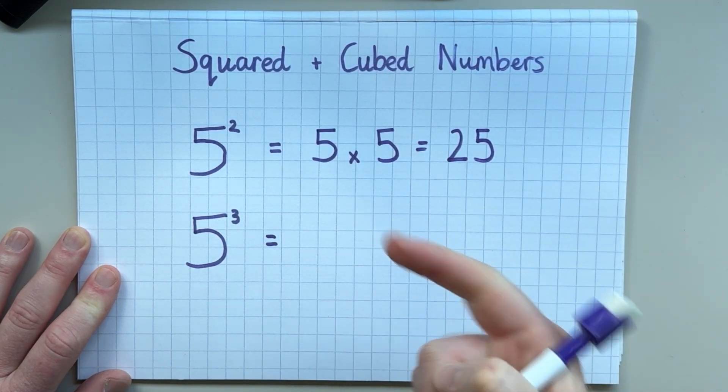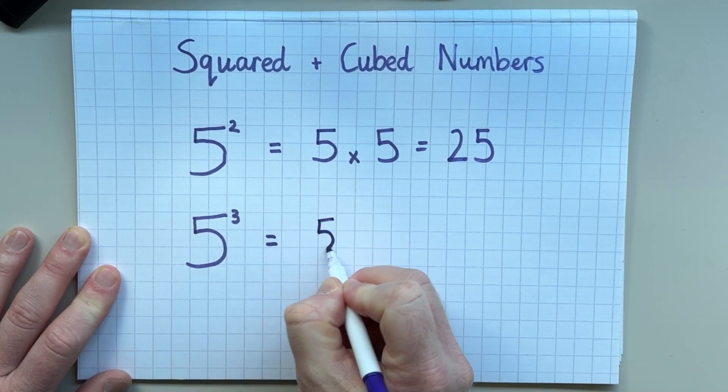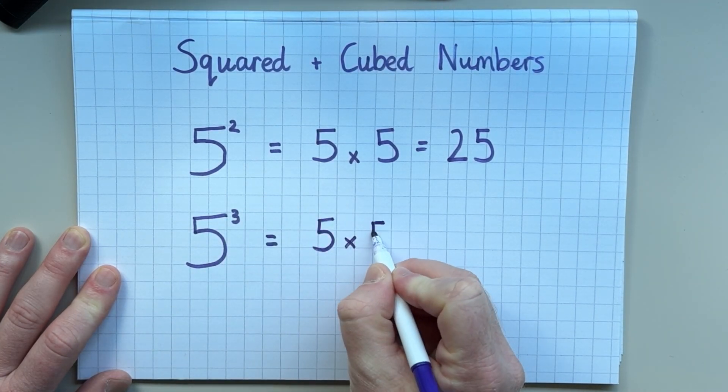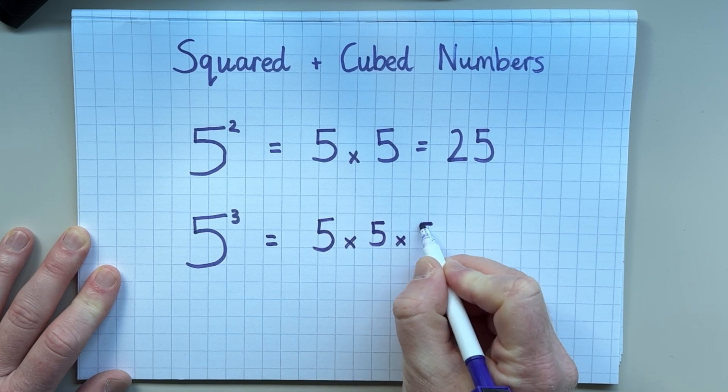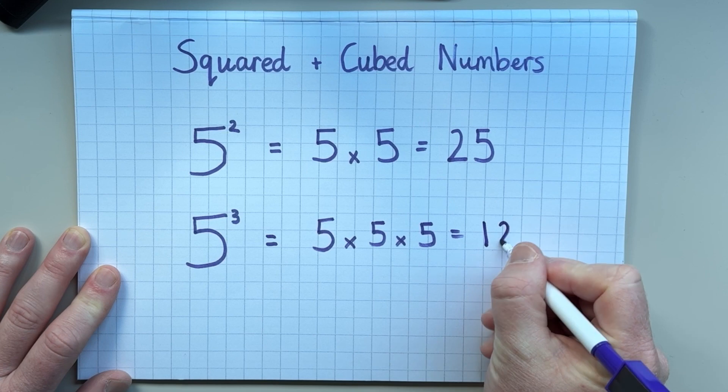If you're also watching this video, then hopefully you'll know that 5 cubed means 5 multiplied by 5 multiplied by 5. And that answer is 125.